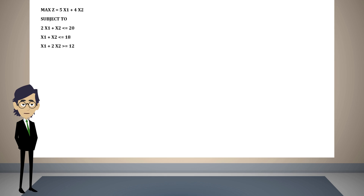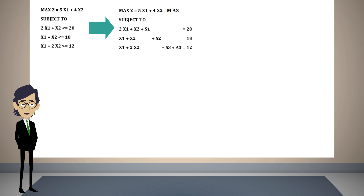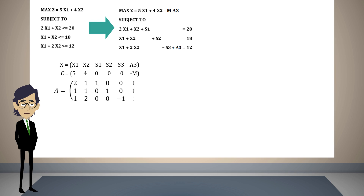The first step is to transform this problem into a system of equalities. This is done by adding slack, surplus, and artificial variables as needed. Once we have the system of equations, we must obtain the vectors and matrices used in the matrix form of the simplex method. X is the vector representing the variables, C represents the vector of coefficients in the objective function, A is the matrix with the coefficients of each variable in the constraints, and B is the vector with the right-hand side values of the constraints.